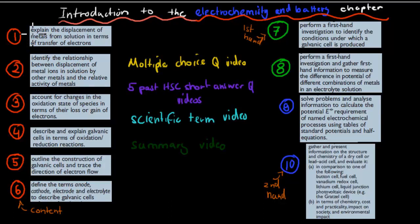So here we've got explain, that's the verb for this dot point. We've got identify for this one. We've got account for this dot point. We have describe and explain, so two verbs for this dot point. We have outline the construction of a galvanic cell and trace the direction of electron flow for this one. So two here again.